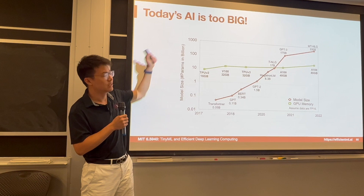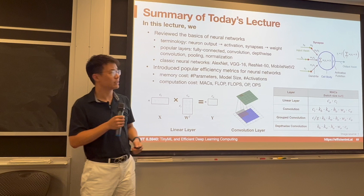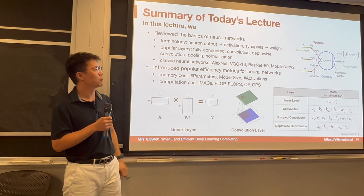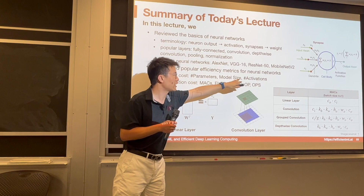In conclusion, today's main topic was the basics of neural networks. Modern AI models are large and require significant resources to achieve high accuracy. We introduced different neural network layers, popular CNN architectures, and key efficiency metrics: number of parameters, model size, activation size, and computational cost in MACs, FLOPs, and OPs. Hopefully this gives you a clear foundation for understanding efficiency metrics going forward.